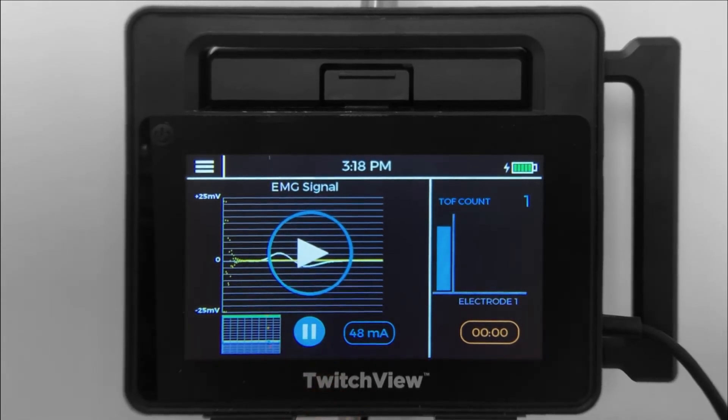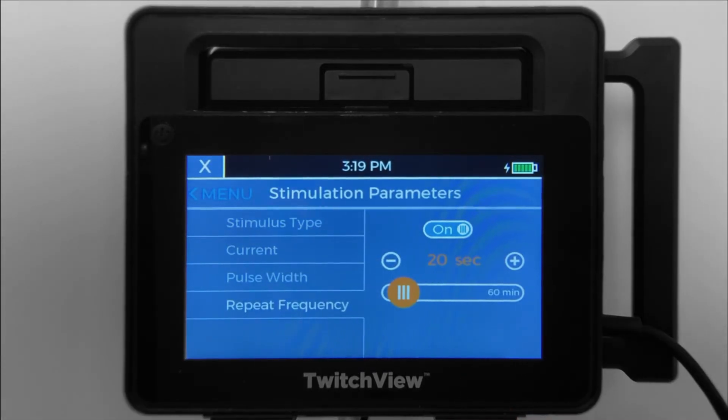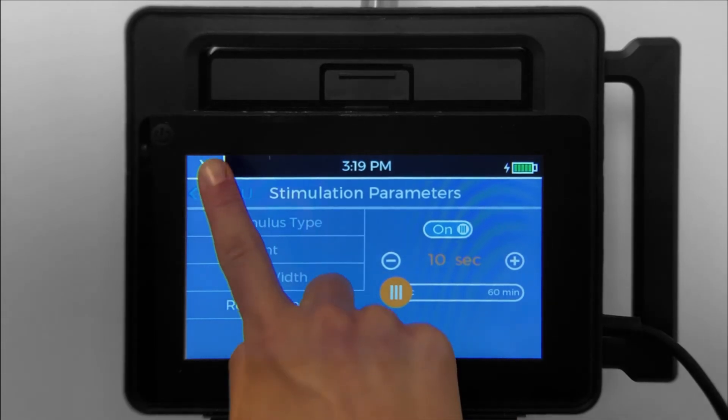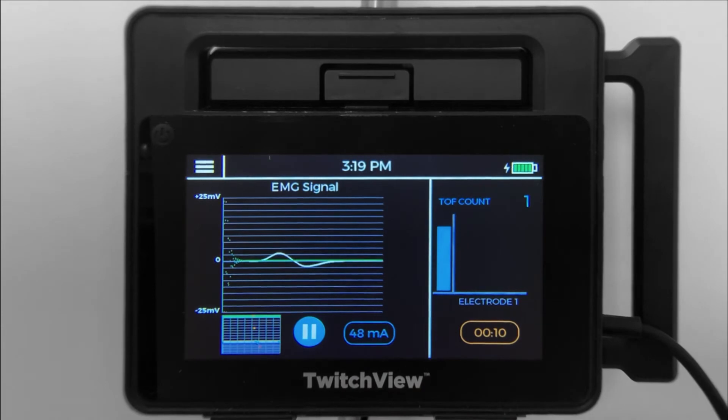A STAT measurement can be taken by pressing pause and then play. To change the measurement interval, touch the countdown timer and toggle to the desired time. Press play to resume monitoring.